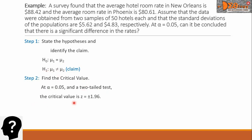The critical value is Z equals plus or minus 1.96. We got this value from the standard normal distribution table.